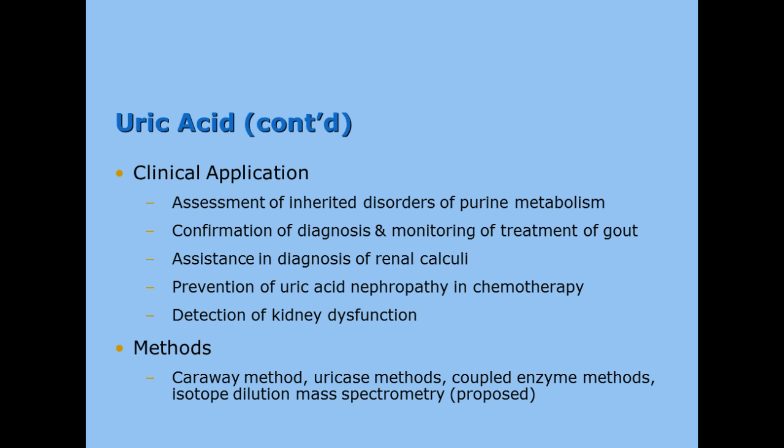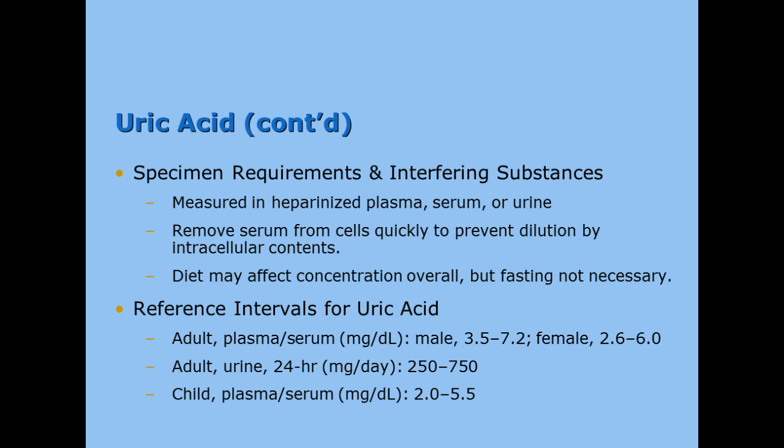We use the caraway method or uricase method for uric acid. Specimen requirements are similar to the other NPNs — green top, red top, or urine. We want to remove the serum from the cells quickly. Diet can affect the concentration, but fasting usually isn't necessary. Normal for a male is 3.5 to 7.2, and for a female a little lower at 2.6 to 6.0. Children are even lower yet.